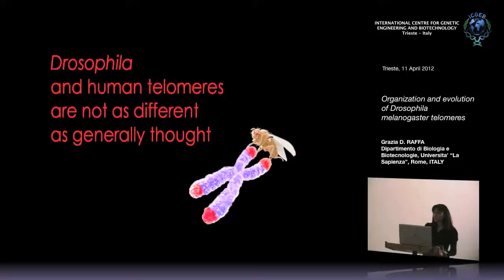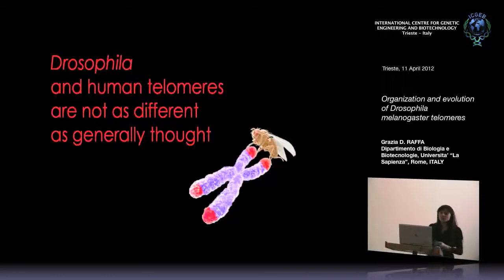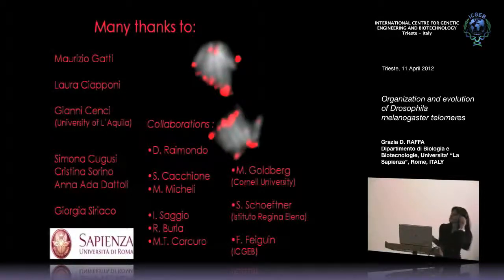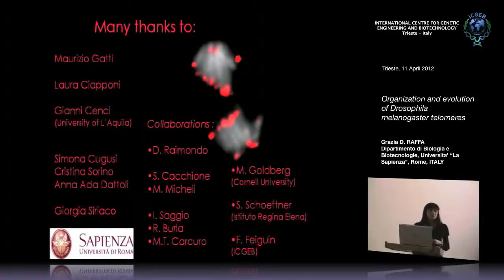Going back to our first question, I hope I convinced you that Drosophila telomeres, which look so weird in the first place, are actually more similar to human telomeres than generally taught. They just use a different path to solve the problem of telomere capping, and understanding this different system might help us understand the general rules. I'd like to thank all people in Maurizio Gatti's lab who collaborated on this work — Laura Ciapponi, Gianni Cenci, other former members, and our collaborators Domenico Raimondo, the groups of Stefano Cacchione and Isabella Saggio, Mike Goldberg at Cornell University, Stefan Scheffner at Regina Elena, and Fabian Feign. Thank you very much for your attention.